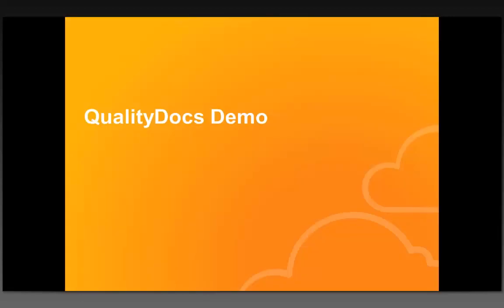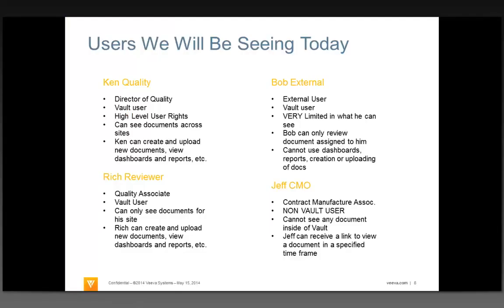The next part goes into the actual QualityDocs demo. Before I jump into that, I want to show a few of the roles I'll be working with today. I'm going to start out with a guy by the name of Ken Quality. He's a Director of Quality and a Vault user, meaning he has a username and password that can go into Vault. Being a higher-level person, he has higher-level user rights and can see a lot of documents across the enterprise.